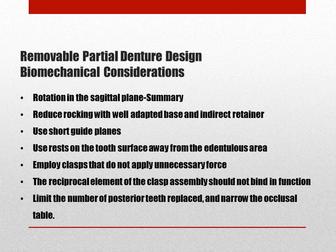Movement in the sagittal plane is the easiest of these motions to detect clinically. Rocking may be reduced with well-adapted bases and indirect retainers. Guiding planes should be short, or proximal plates relieved in the gingival one-third to prevent binding when depressed. Rests are placed on the side away from the edentulous area, and clasps should not apply undue stress on the abutment. Reciprocating elements must be carefully considered to prevent establishing the fulcrum line through the distal aspect of the tooth, most easily avoided by using the vertical bar minor connector and short proximal plates. The number of posterior teeth should be minimized, as should the width of the occlusal table. Sharp cuspal anatomy increases the chances of interferences to centric and lateral movement.